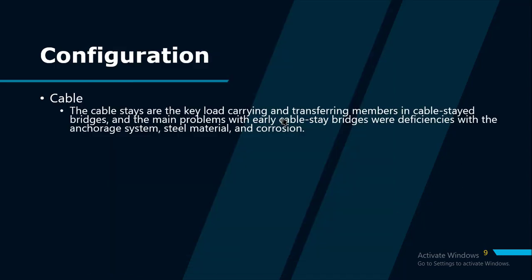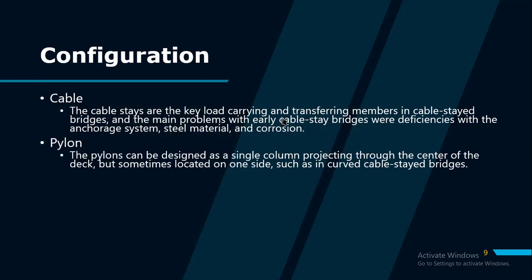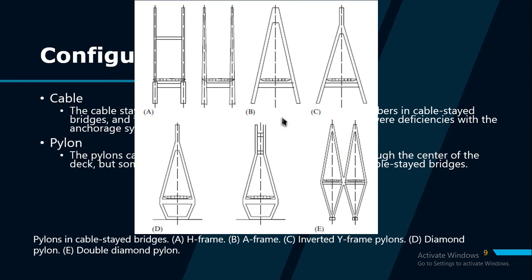Cable stays are the key load-carrying and transferring members in cable-stayed bridges. The main problems with early cable-stay bridges were deficiencies with the anchorage system, steel material, and corrosion. The pylons can be designed as a single column projecting through the center of the deck, but sometimes located on one side, such as in curved cable-stayed bridges. Numerous types of pylons are shown in the figure.